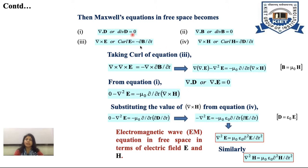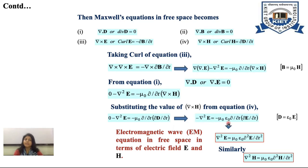From Maxwell's first equation, del dot D equals 0, and since D equals epsilon naught E, del dot E equals 0. So that term vanishes, giving minus del squared E equals minus mu naught del by del t of del cross H. Substituting del cross H equals del D over del t, and D equals epsilon naught E, we get minus del squared E equals minus mu naught epsilon naught del squared E over del t squared.